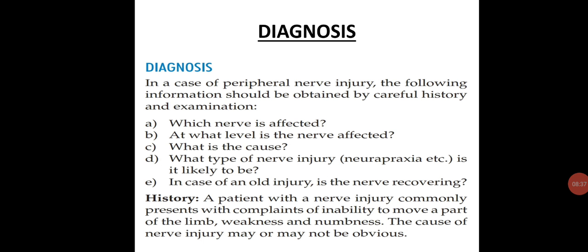Diagnosis: in a case of peripheral nerve injury, the following information should be obtained by careful history and examination — which nerve is affected, at what level, what is the cause of injury, what type of nerve injury (neuropraxia, axonotmesis, or neurotmesis), and in an old injury, whether the nerve is recovering. A patient commonly presents with inability to move part of the limb, weakness, and numbness of the injured part.